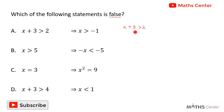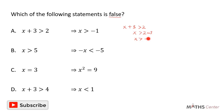We have x plus 3 is greater than 2. Grouping like terms gives x is greater than 2 minus 3, and 2 minus 3 gives negative 1. So x is greater than negative 1. This statement is true: if x plus 3 is greater than 2 then it implies that x is greater than negative 1.